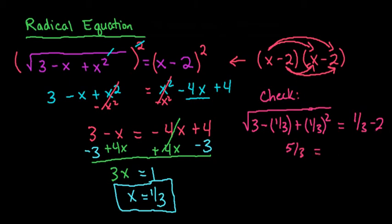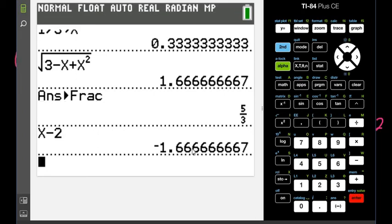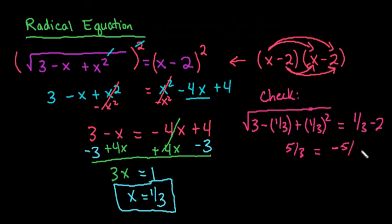And on this side, if we notice 1 third minus 2, if I take x minus 2 and plug in the other side, I end up with the negative of this value. So this ends up giving me a negative 5 thirds. This is not equal to each other, so this is what is known as an extraneous solution, where it would work if it was a quadratic, but because it's a radical, and I end up with a negative on this side, this really has no real solution.